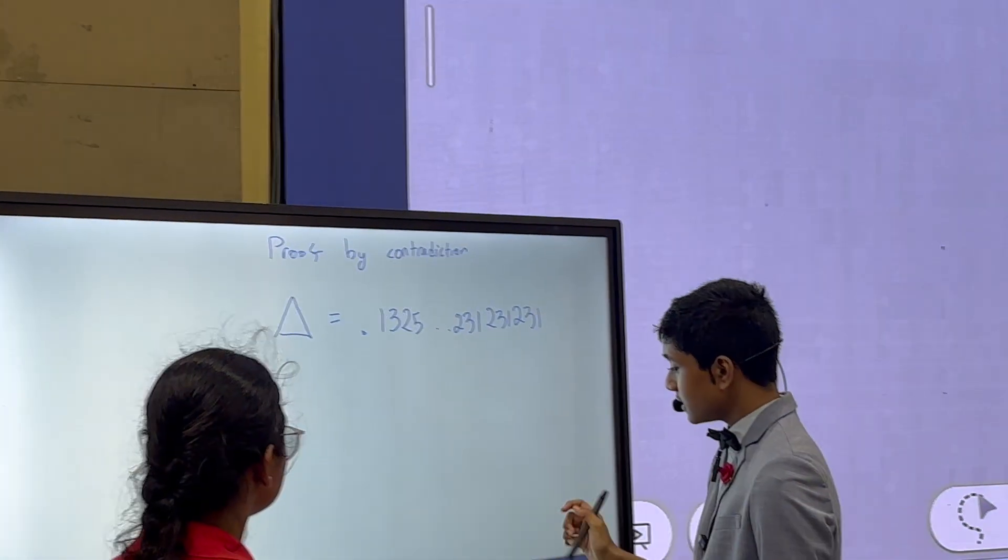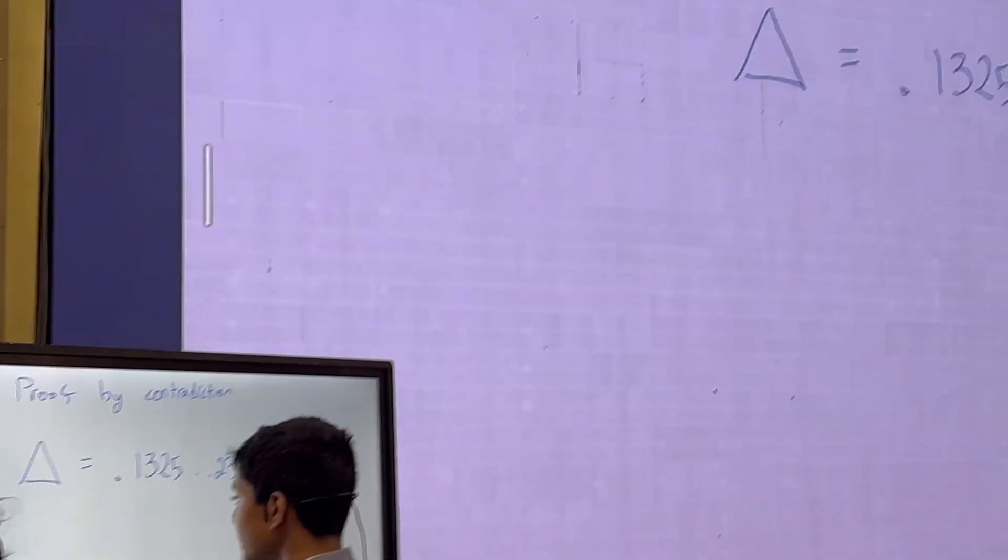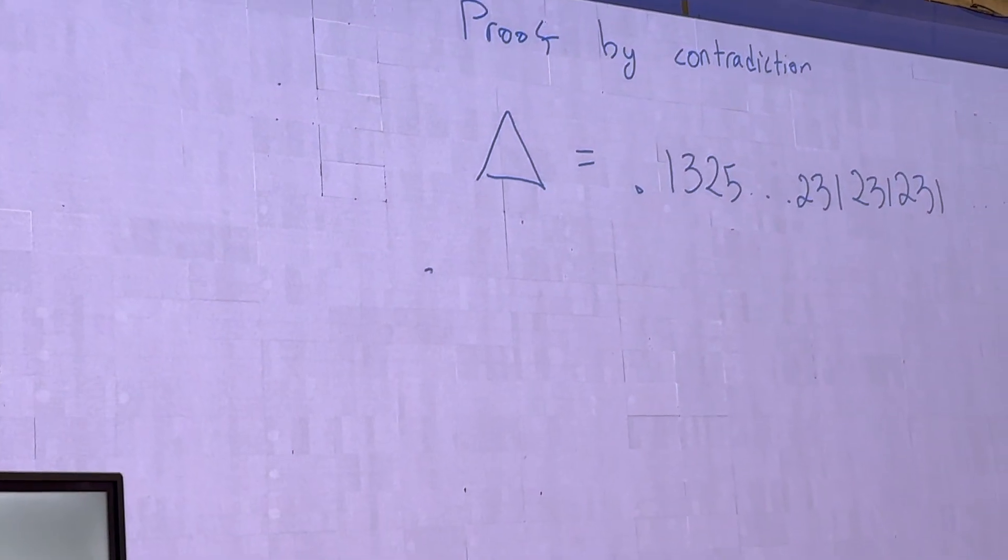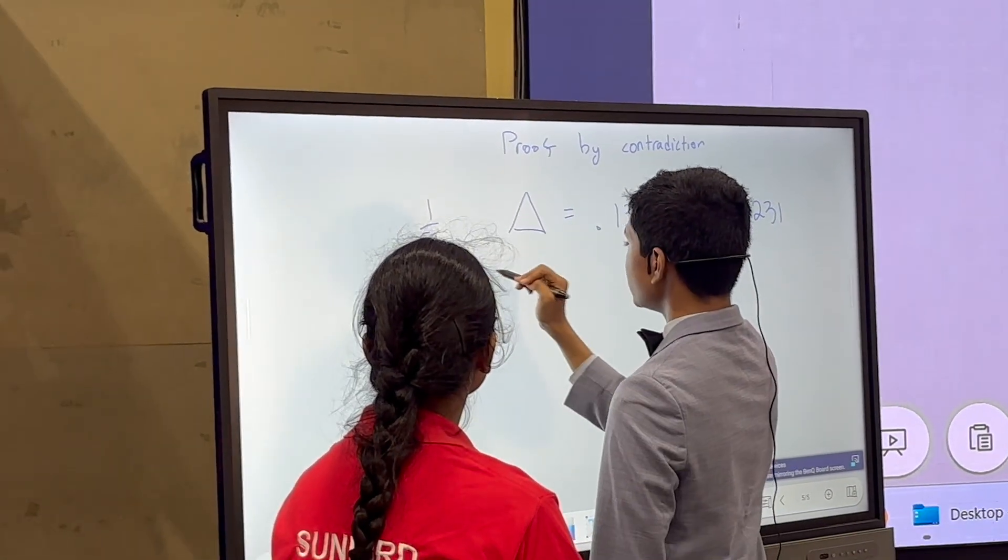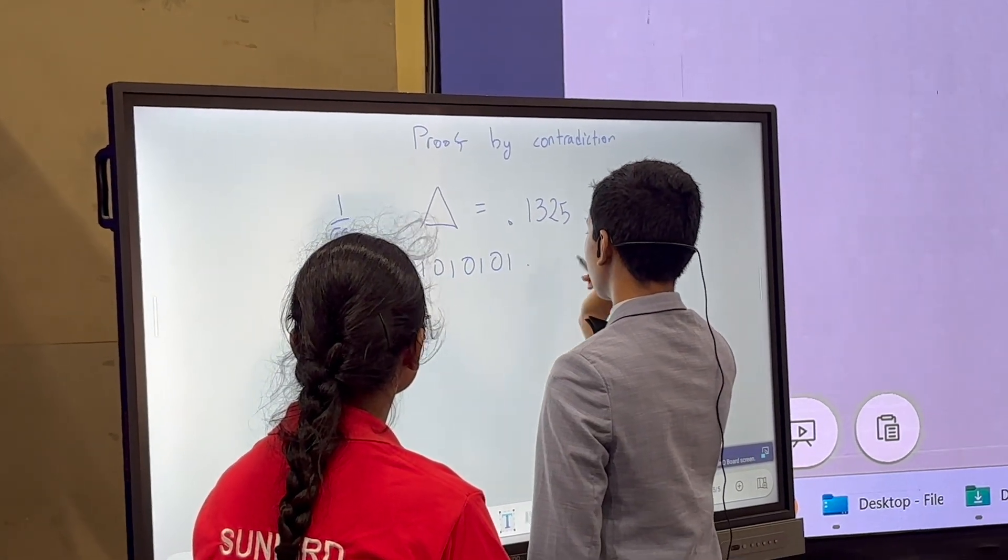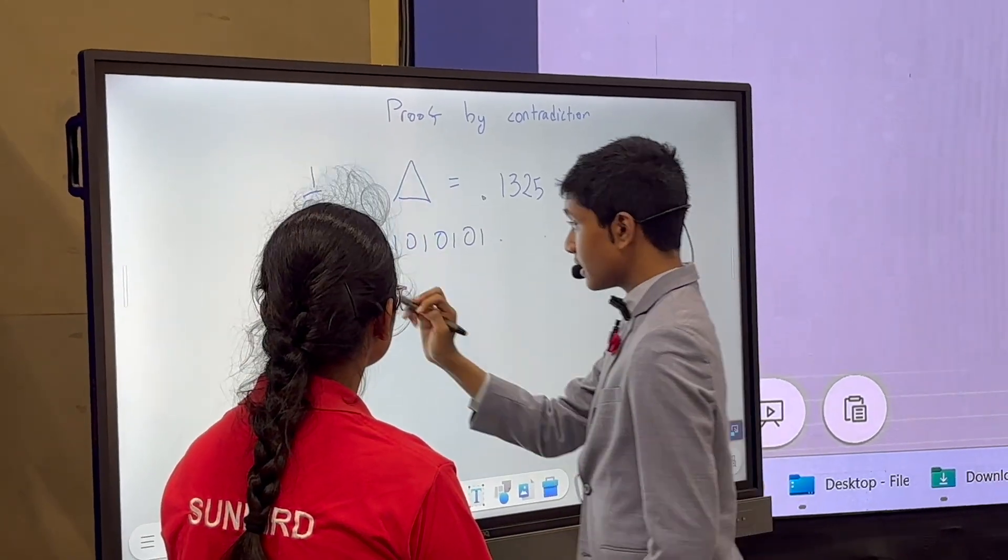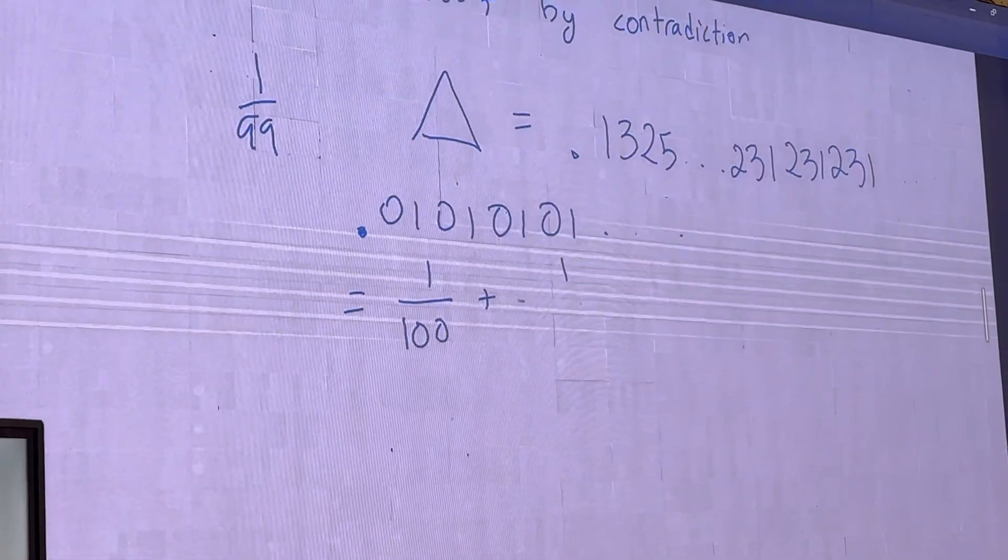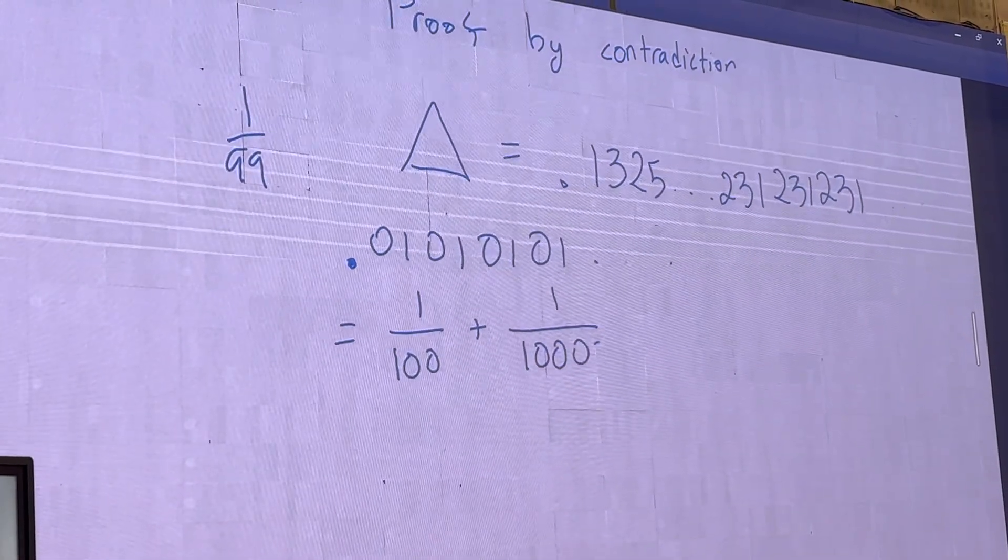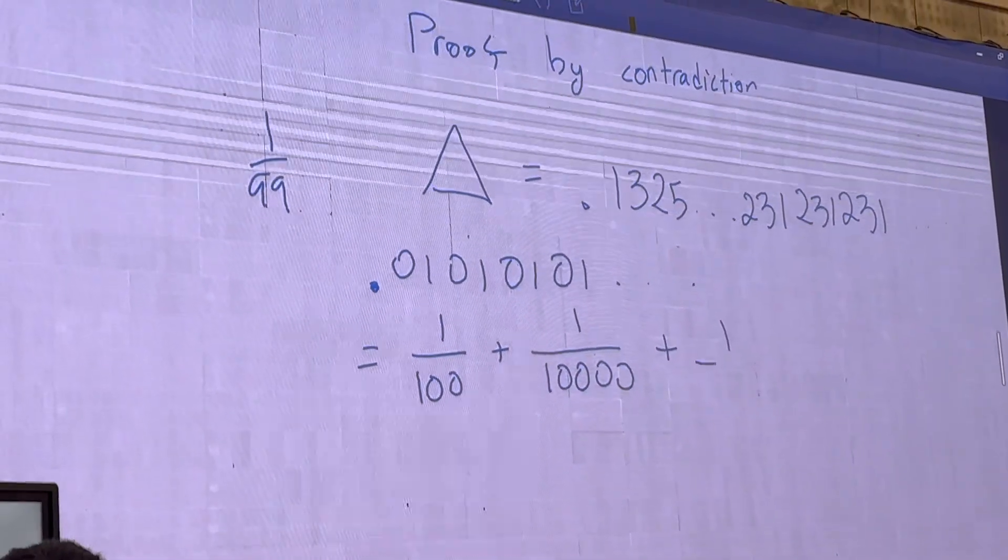231, 231, 231, et cetera. But now see, if there's a repeating decimal expansion, let's say you have 1/99 which is 0.01010101 et cetera. That can be rewritten as 1/100 plus 1/10,000 plus 1/1,000,000, and so on and so forth.